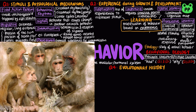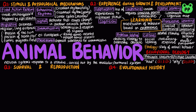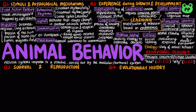Culture is a system of information transfer through observation or teaching that influences the behavior of individuals in a population. Culture can alter behavior and influence the fitness of individuals, a process known as social learning. Problem solving is the process of devising a strategy to overcome an obstacle; for example, chimpanzees can stack boxes in order to reach suspended food. Cognition refers to a process of knowing that may include awareness, reasoning, recollection, and judgment. For example, honeybees can distinguish same from different.